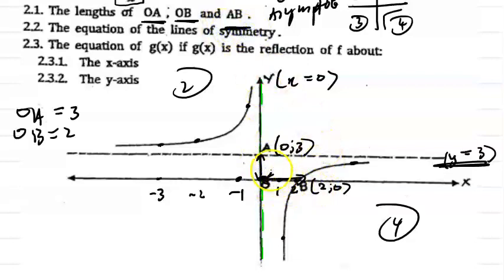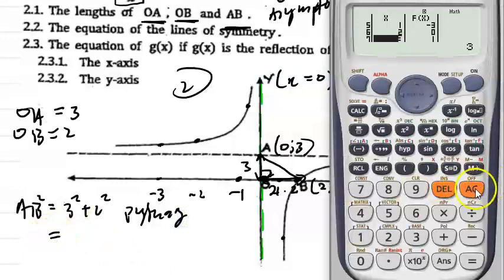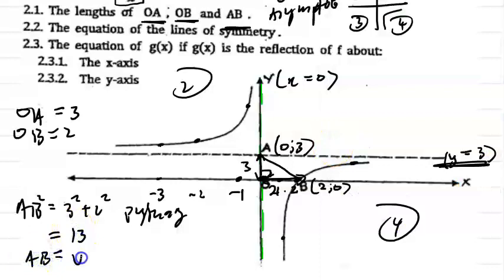And then AB — the distance from A to B. We can use Pythagoras: AB squared equals 3 squared plus 2 squared. Using a calculator, 3 squared plus 2 squared equals 13. Therefore AB equals the square root of 13, which is approximately 3.6 units.